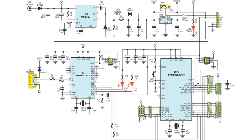Here we have a USB connector with its pins. We have the voltage pin, ground on the last pins, D-minus, D-plus, and the ID identification pin.